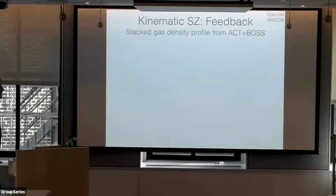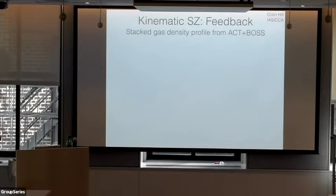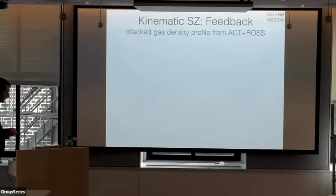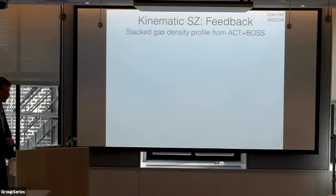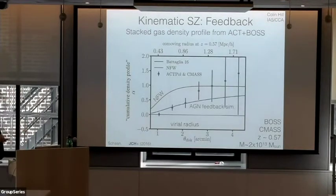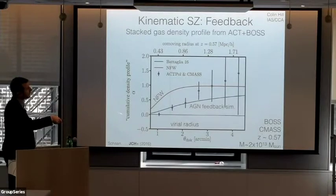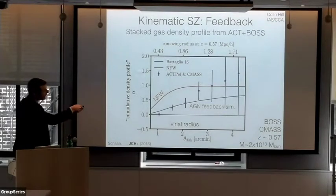Now let me turn to the kinematic SZ signal. Extracting the kSZ signal requires some statistical wizardry because it preserves the blackbody spectrum of the CMB, but with various types of cross-correlations you can extract it. One type requires spectroscopic galaxy data — I'll show you an example. We inferred the stacked gas density profile of BOSS CMASS galaxies from a cross-correlation of ACT data with BOSS. I'm showing the cumulative electron density profile as a function of halo-centric radius, for halos at about redshift 0.6 with halo masses around massive-galaxy to low-mass-group scale.